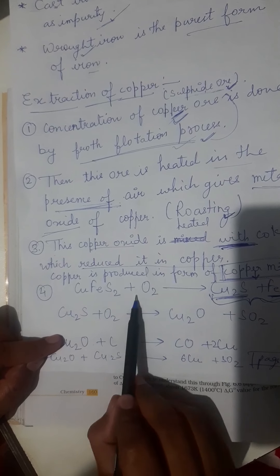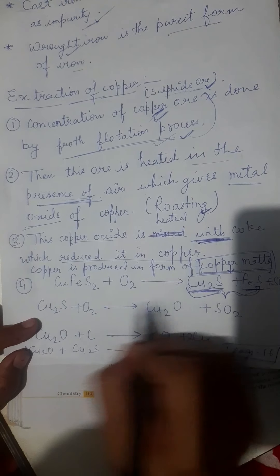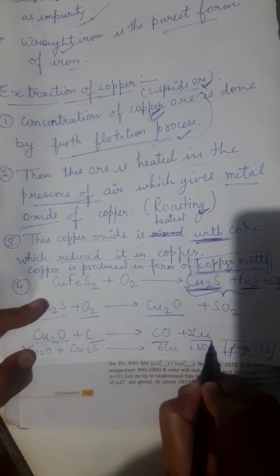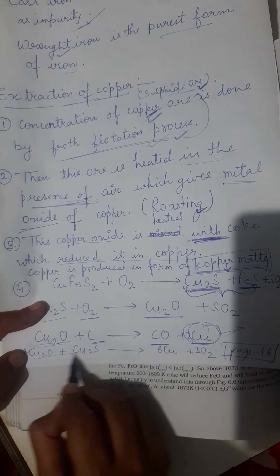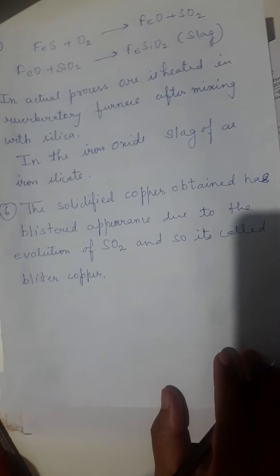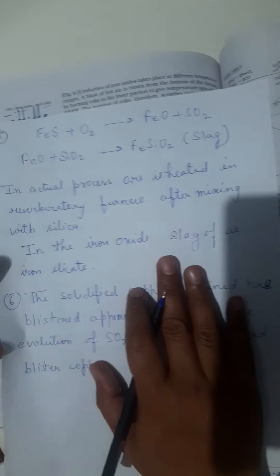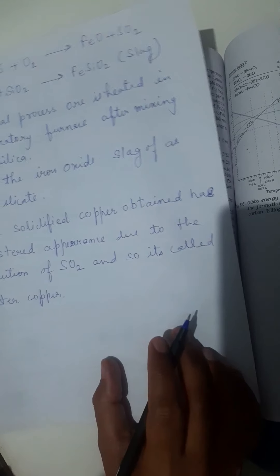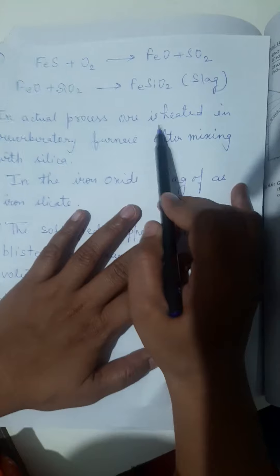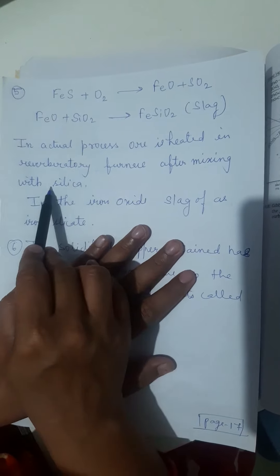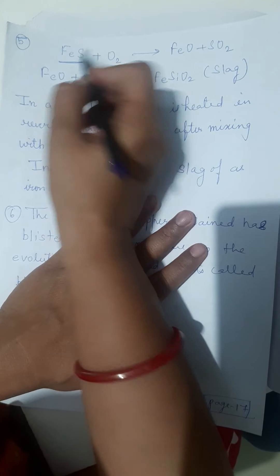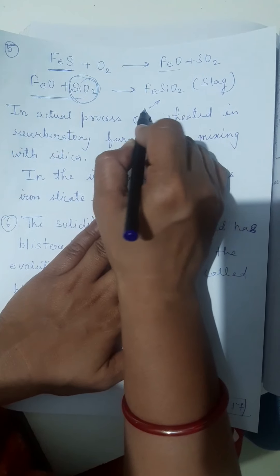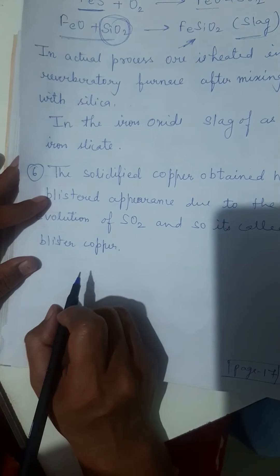Now you can see the reactions. CuFeS2 plus O2 gives Cu2S plus FeS plus SO2. Cu2S reacts with oxygen to form copper oxide. This copper oxide reacts with carbon to form carbon monoxide and copper. We get the copper. If these two react together, we also get this type of reaction. Now, FeS is also involved in the reaction. In actual process, ore is heated in reverberatory furnace after mixing with silica so that iron sulfide converts to iron oxide, and this iron oxide reacts with silicates and forms slag. This slag will be separated.